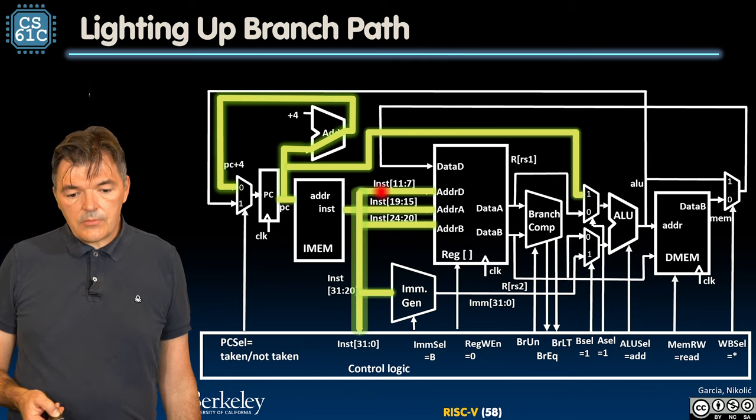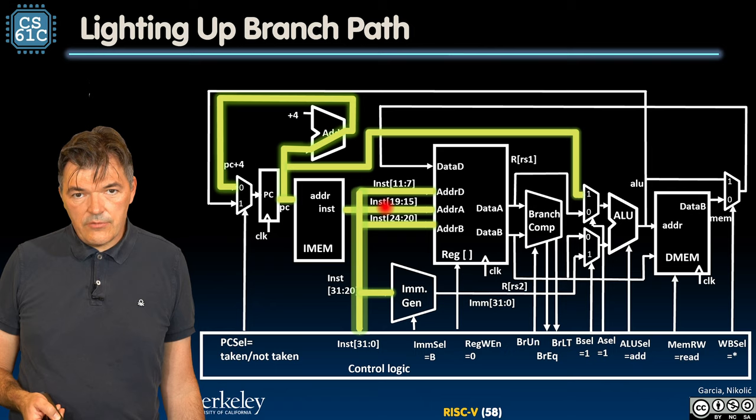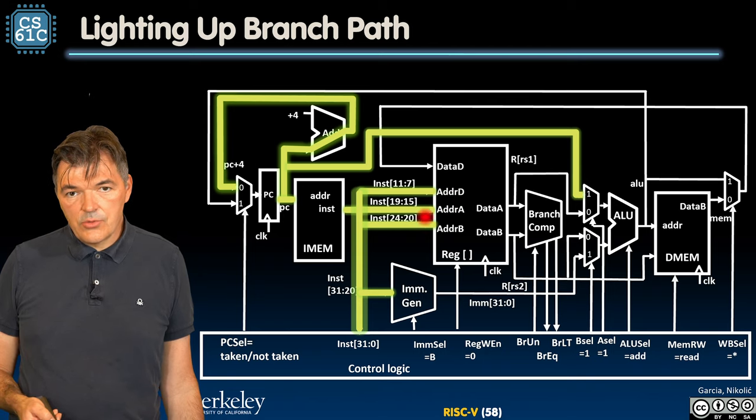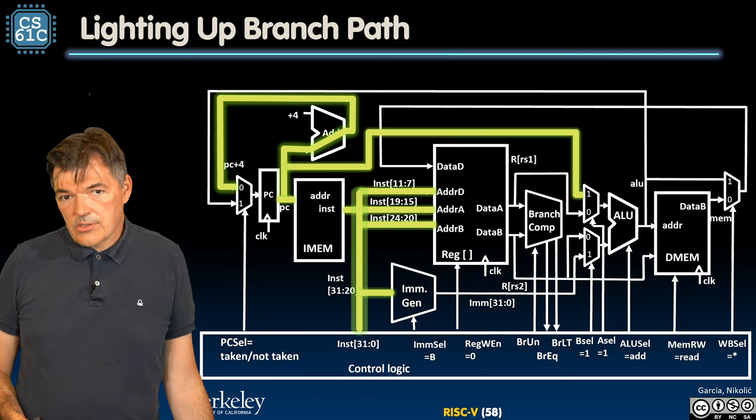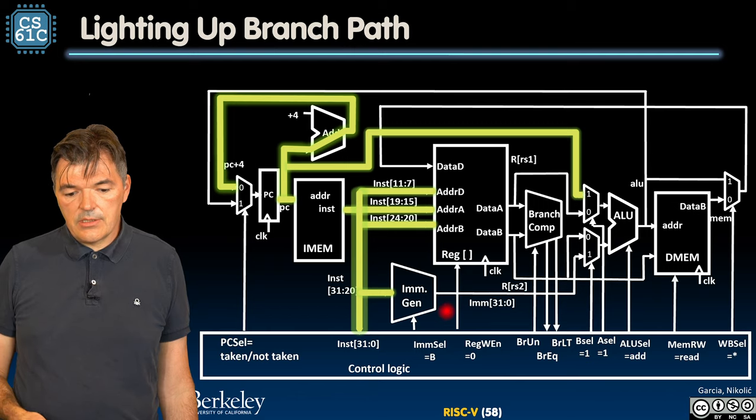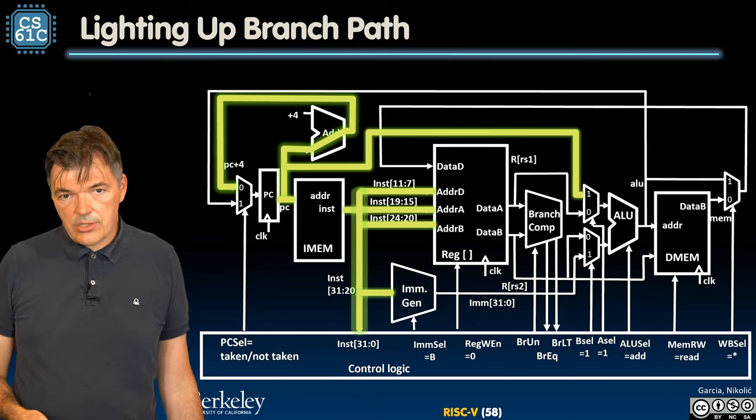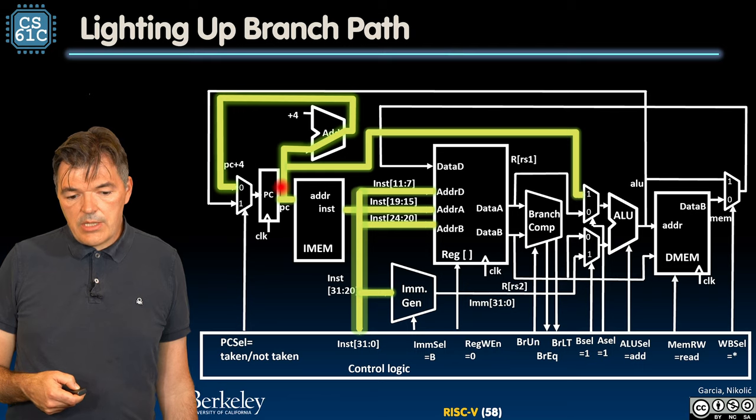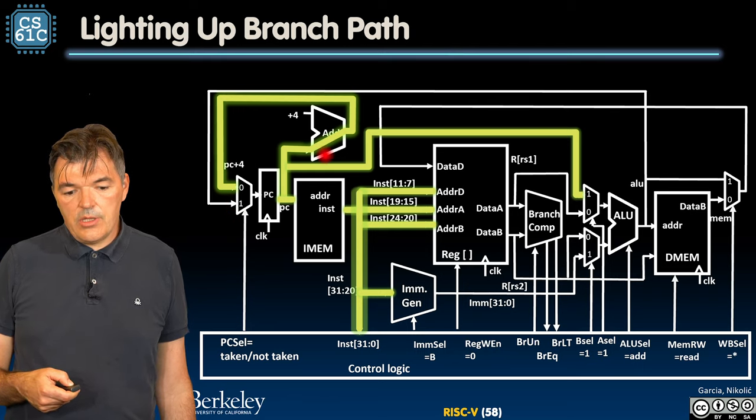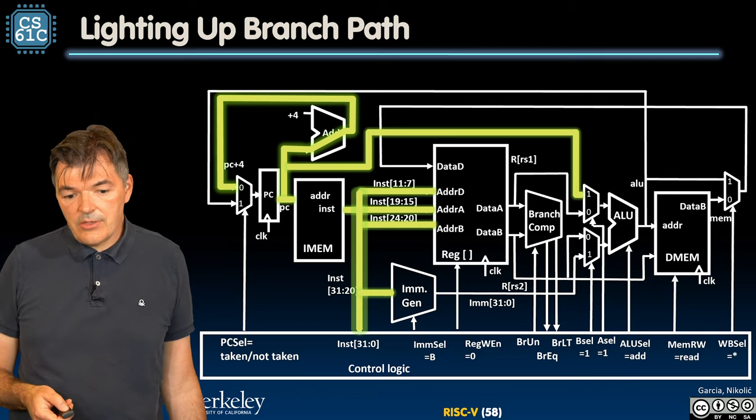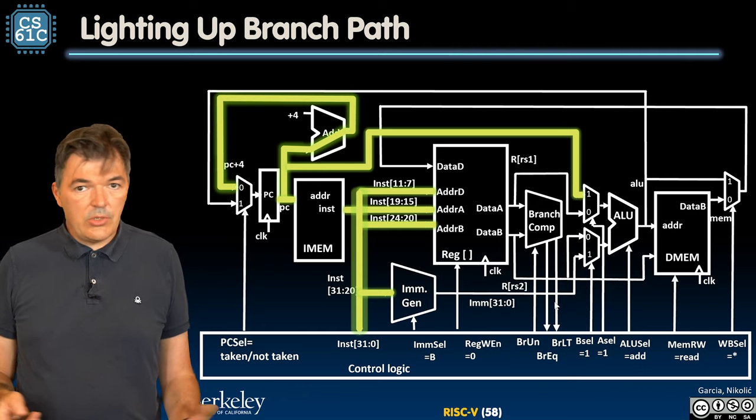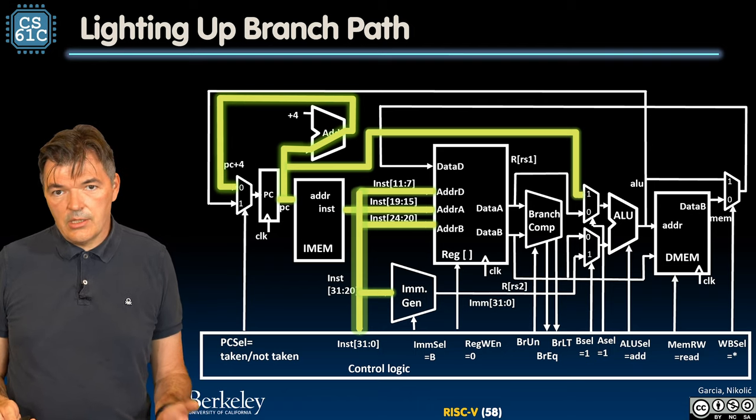Well, first we fetch an instruction by pointing the program counter to instruction memory. Then we will fetch that instruction and instruction will address appropriate fields in the register file. We only care about the two source registers. We don't care about the destination register and therefore register write enable is going to be disabled. We also start the immediate generation through sign extension. But notice this. We prepare the next value of the program counter first. We increment it by four because we may take that value or we send the program counter downstream to the ALU.